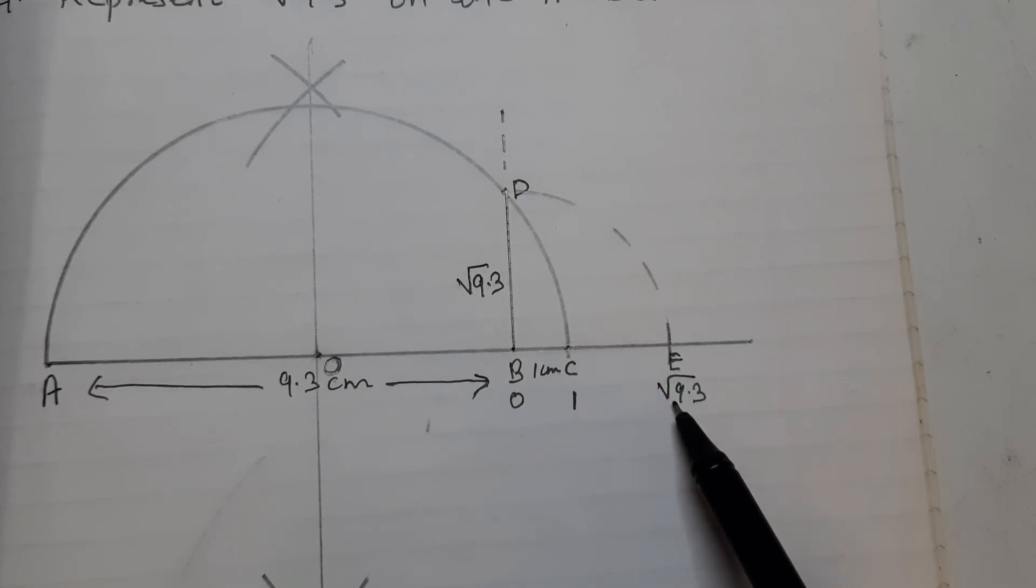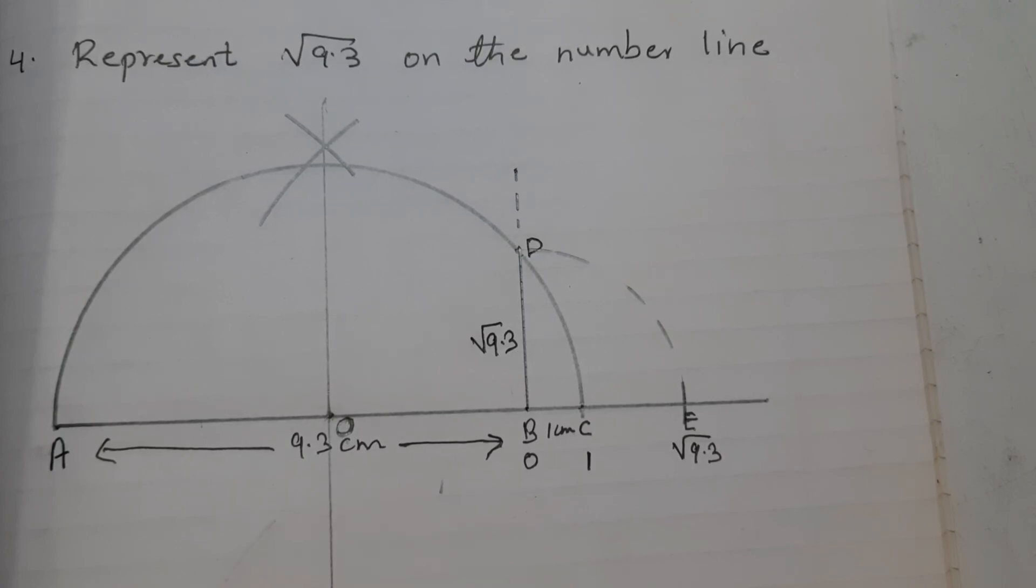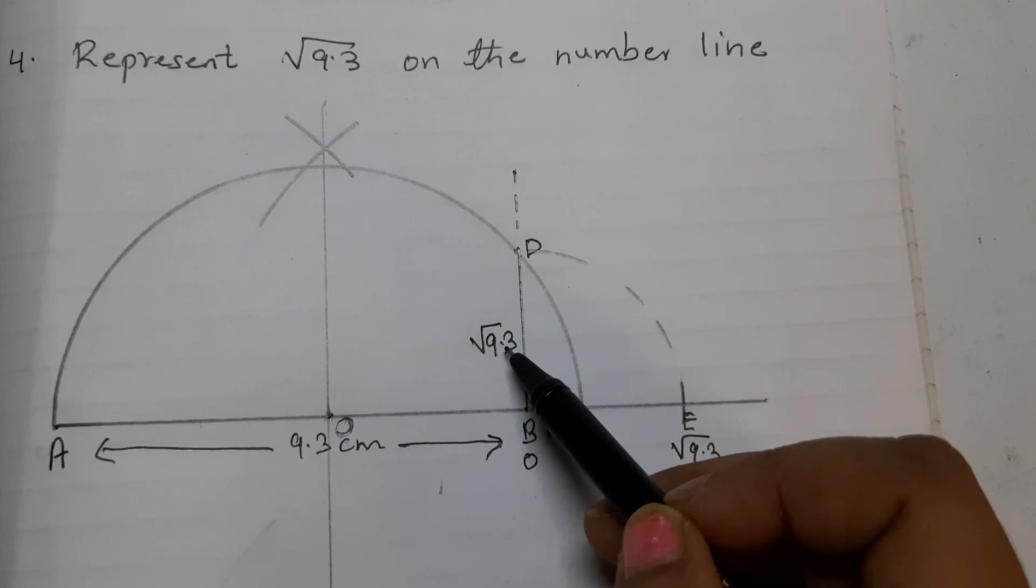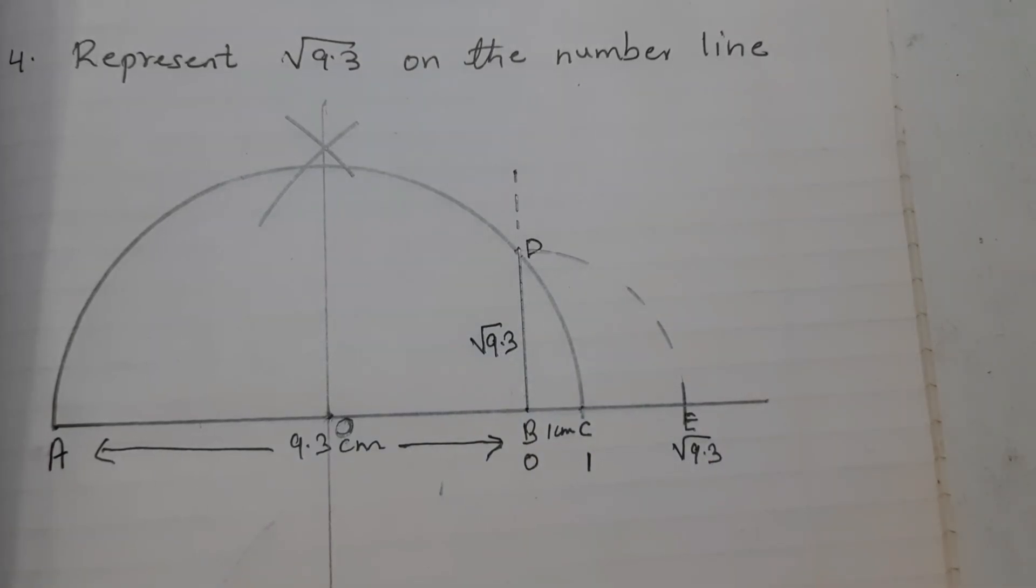E represents root of 9.3. Using Pythagoras theorem, we can prove that BD is equal to root of 9.3. That's all for now. See you in the next video.